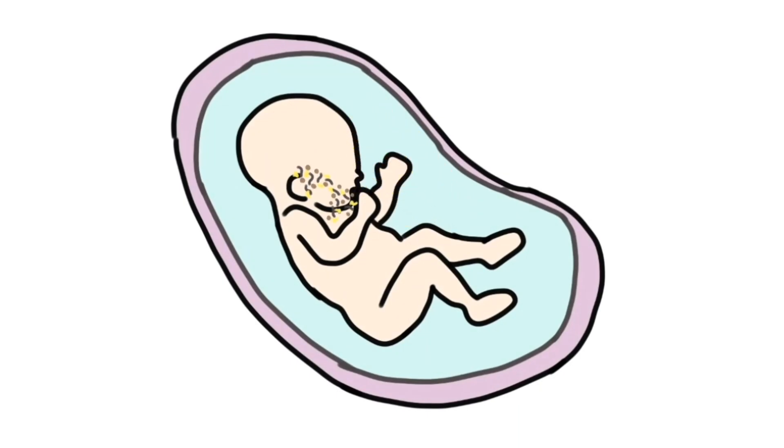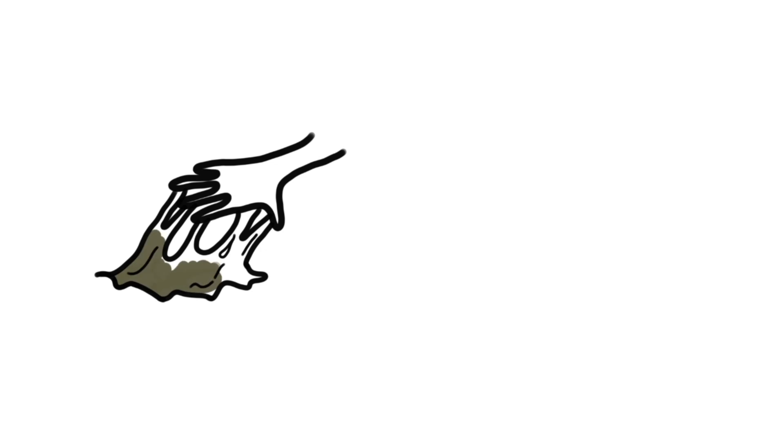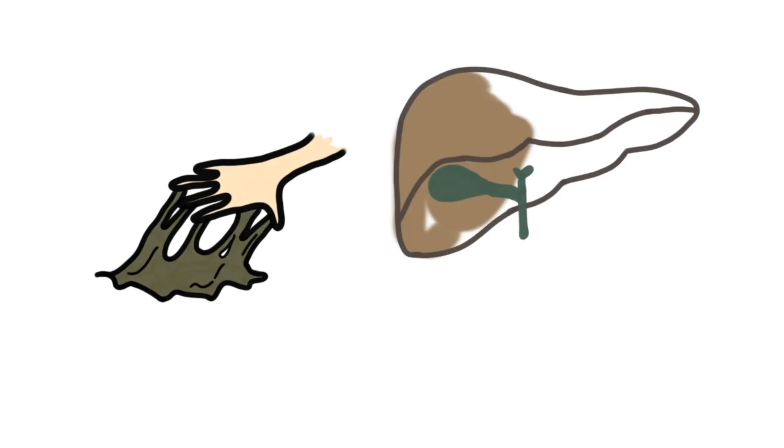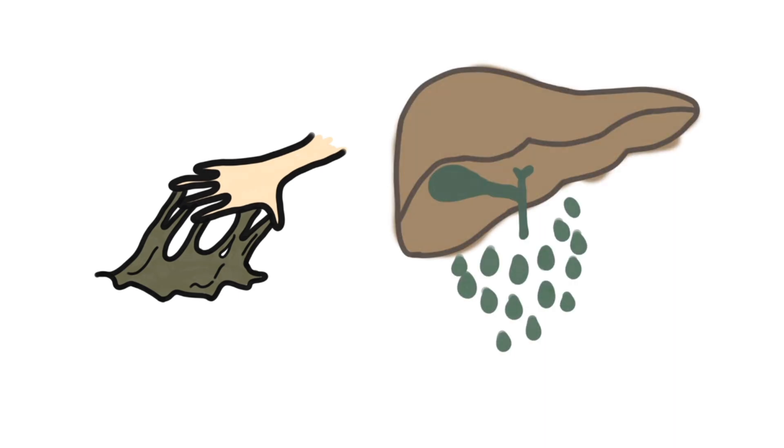The mucus in the amniotic fluid gives that sticky appearance to our first poop, and a greenish color liquid called bile, excessively secreted by our liver as it will help in the digestion of milk, gives our poop the olive green appearance.